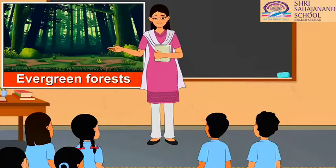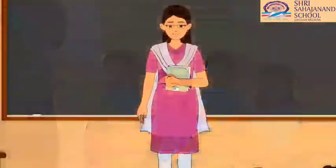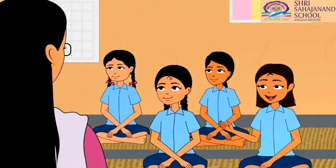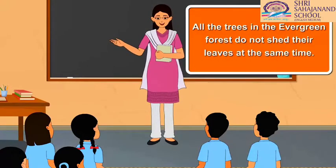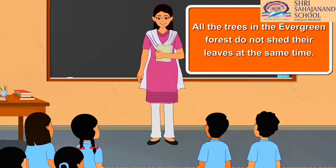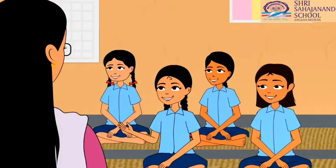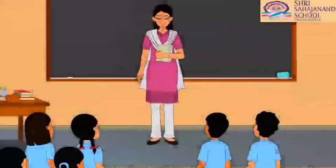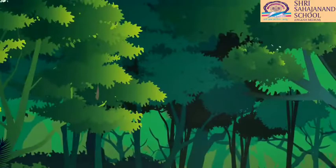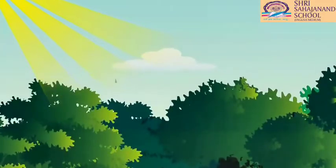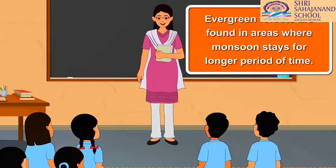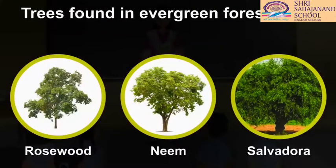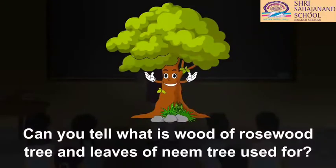Evergreen forests — the forests which remain green. Correct! How do these forests always remain green? These forests always remain green because all the trees do not shed their leaves at the same time. The trees grow very close to each other and form a canopy on top which does not allow sunlight to reach the forest floor. They are found in areas where monsoon stays for a longer period of time. Trees like rosewood, neem, and salvadora are found here. Children, can you tell what the wood of rosewood and leaves of neem tree are used for?